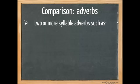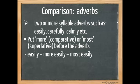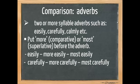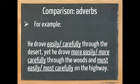When it comes to two or more syllable adverbs, such as easily, carefully and calmly, we put more for the comparative or most for the superlative before the adverb. Easily, more easily, most easily. Carefully, more carefully, most carefully. Calmly, more calmly, most calmly. For example, he drove easily or carefully through the desert. Yet he drove more easily or more carefully through the woods and most easily or most carefully on the highway.